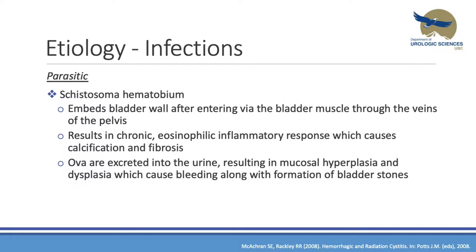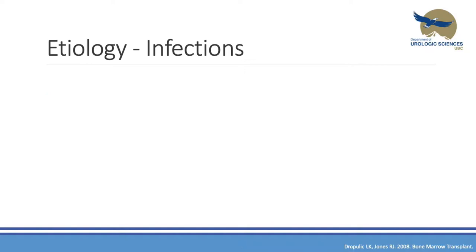Schistosomiasis is real — we saw it at Children's two weeks ago. It's not just in Egypt but is rarely seen in North America. The larvae penetrate the skin and eventually get into the bladder wall through the veins of the pelvis. Untreated long-term infections can lead to squamous cell carcinoma of the bladder. The ova excreted into urine cause mucosal hyperplasia, dysplasia, bleeding, and potential bladder stones. The patient was an eight-year-old girl whose family had swum in Lake Malawi in Africa.